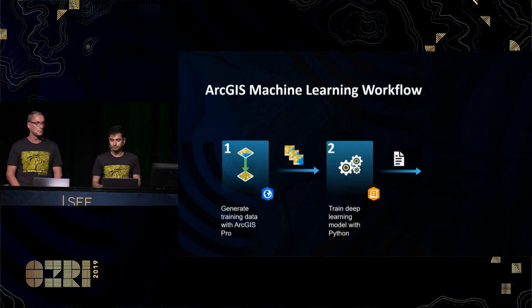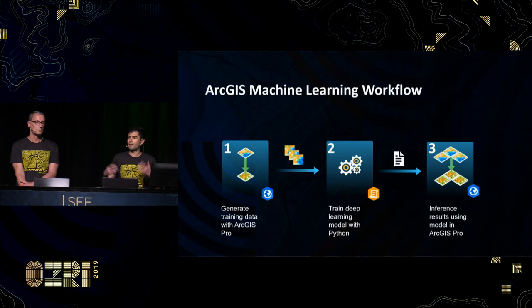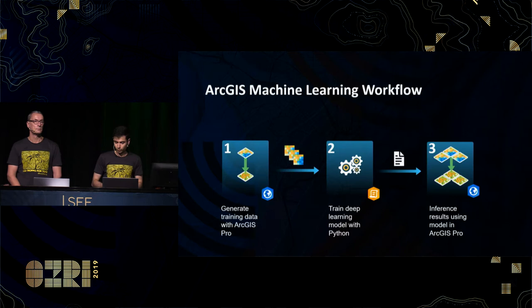Defining that model is usually the most technically intensive and most complex portion of the entire process. Finally, we reach part three, which is typically done back inside an ArcGIS environment — usually ArcGIS Pro or ArcGIS Enterprise. This is where the GIS professional takes the model definition and uses the inferencing tools within ArcGIS to output the predicted results.